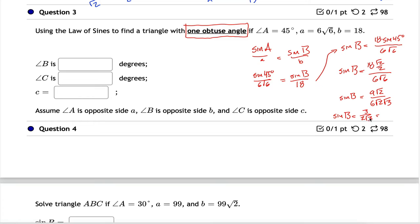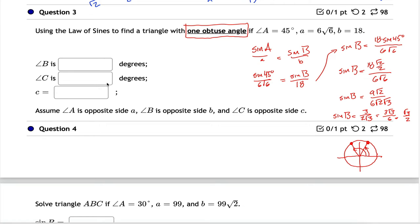Rationalizing the denominator: multiply top and bottom by √3 to get 3√3 / 6 = √3/2. So sin(B) = √3/2. You might think B = 60°, but there's another angle on the unit circle — 120° — where sine also equals √3/2. Since this triangle has one obtuse angle, and we've already used 45° for A, if B were 60° that would leave only 75° for C with no obtuse angle. Therefore B must be 120°.